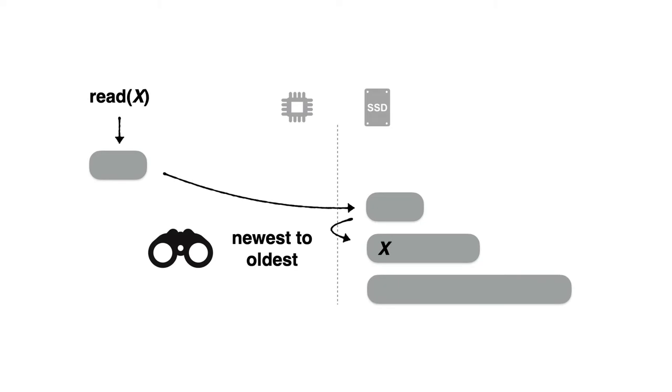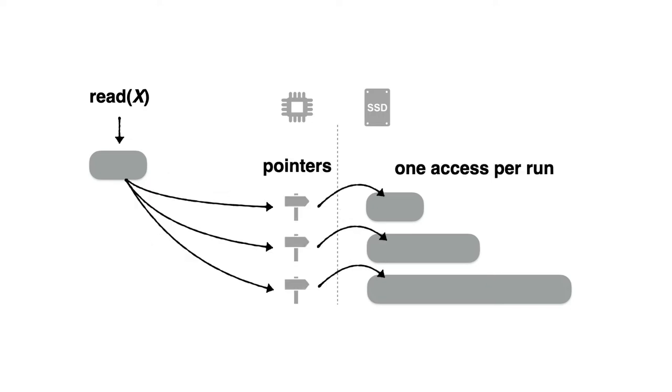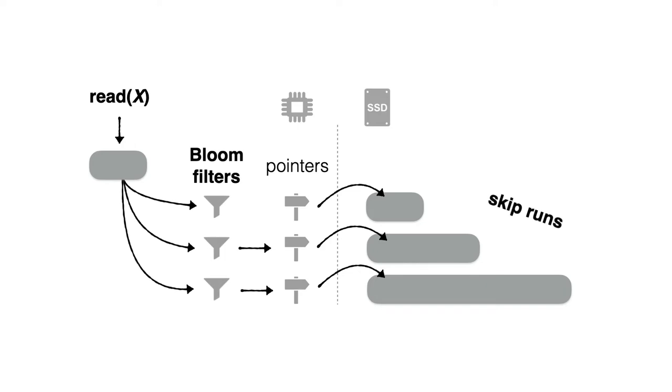In order to search for a data entry with a given key, we search the levels from smallest to largest. As soon as we find an entry with a matching key, the search terminates. To facilitate the performance of reads, there are fence pointers in memory. These contain the first key of every storage block of every run, so they allow us to reach the relevant key range in each run with just one storage access. In addition, there is a bloom filter in memory for each run. These allow us to skip accessing runs that do not contain the relevant key for our point queries.